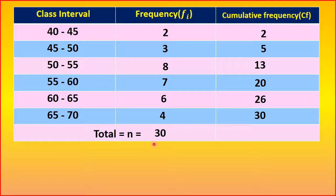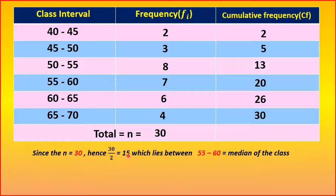N is very important in median. Since n is equal to 30, hence 30 by 2. N by 2 is equal to 15, which lies between 55 and 60. That is the median of the class.